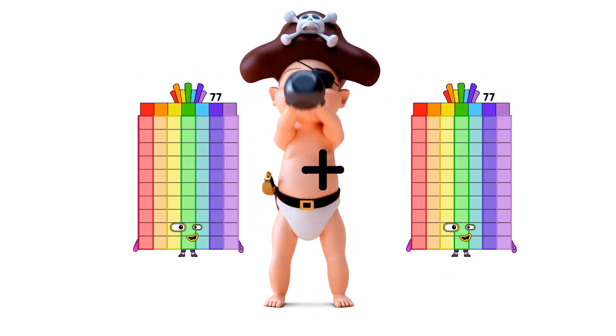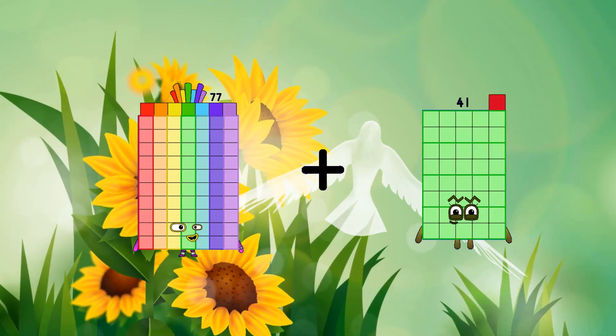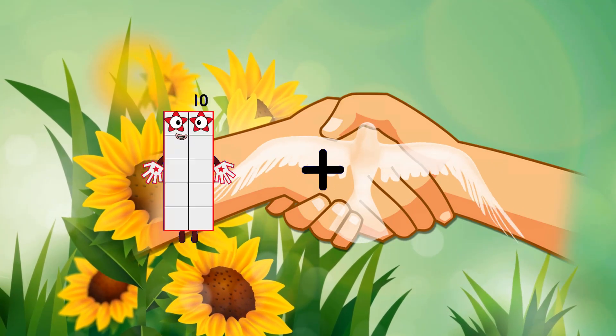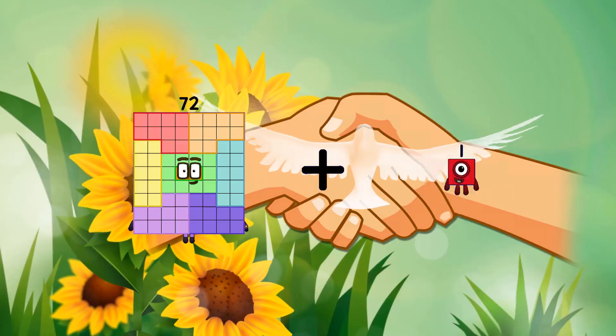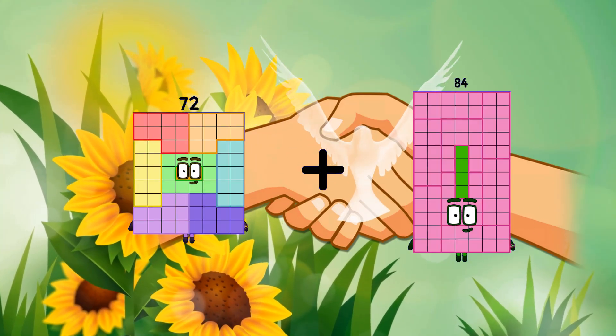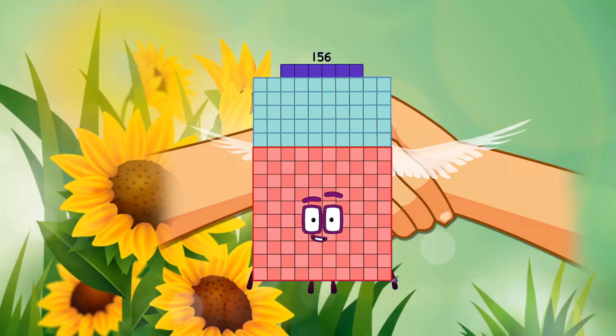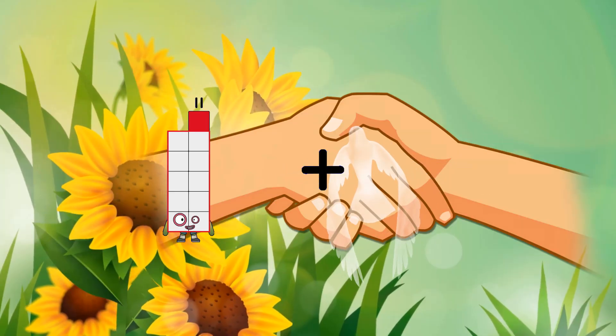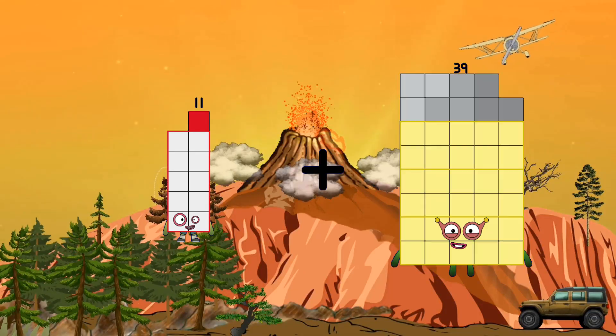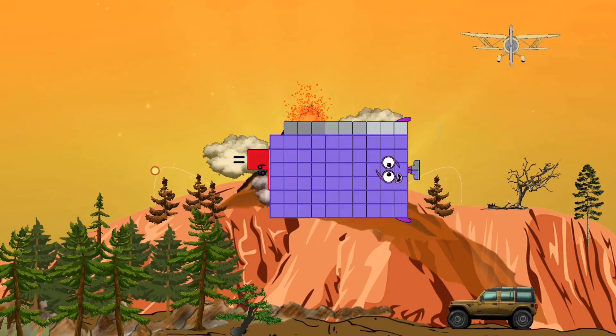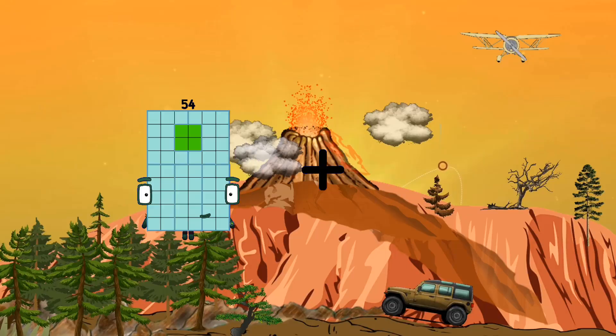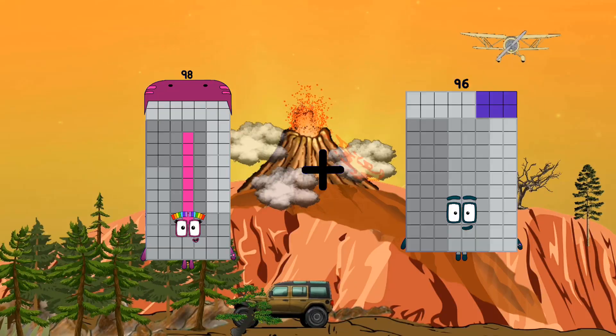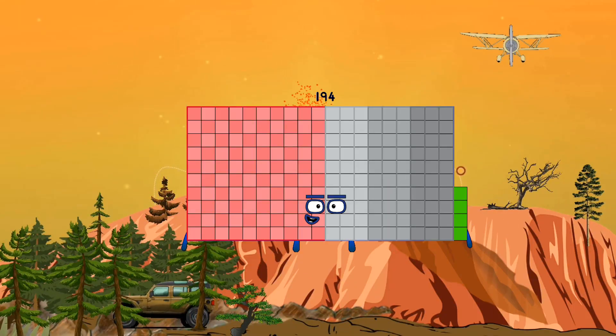77 plus 41 equals 118. 72 plus 84 equals 156. 11 plus 69 equals 80. 98 plus 96 equals 194.